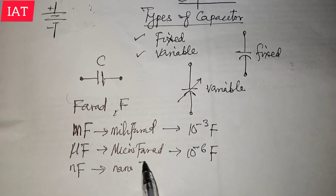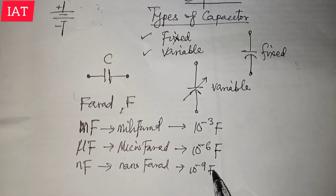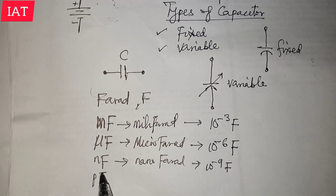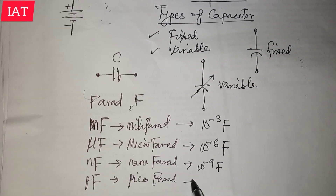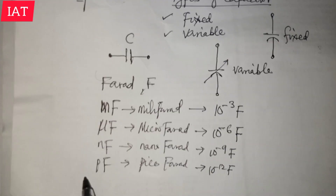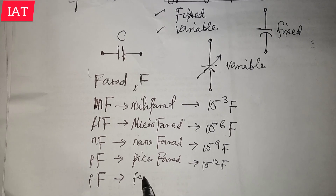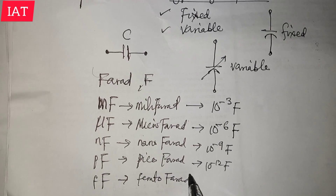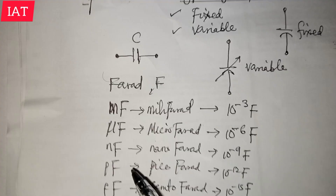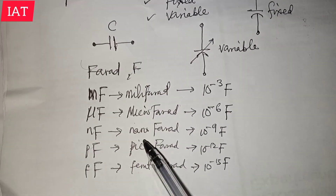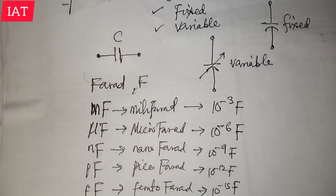The nanofarad represents 10 to the power of minus 9 farads. We also have the picofarad, which is 10 to the power of minus 12 farads. And we have the femtofarad, which is 10 to the power of minus 15 farads. These are the sub-units of capacitance beyond the base unit of the farad.